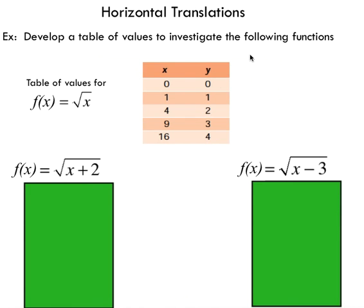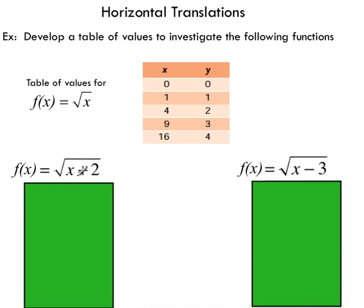Now let's talk about horizontal translations using the square root function. I'm going to show the table of values for the base graph and then create a horizontal translation by making changes to the equation. You can see I've added two inside the function. If I stuck the two at the end of the function, this would produce a vertical translation — but making a change inside the function like this produces a horizontal translation.